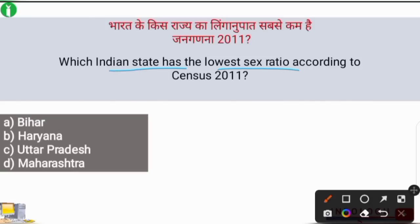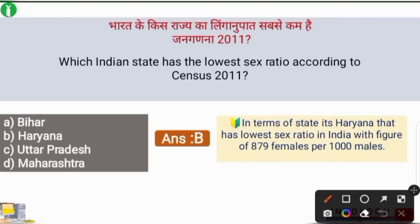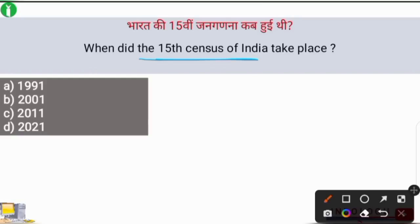Next question: which Indian state has the lowest sex ratio according to the census of 2011? The correct answer is option B — Haryana. Haryana had the lowest sex ratio in India with a figure of 879 females per thousand males.